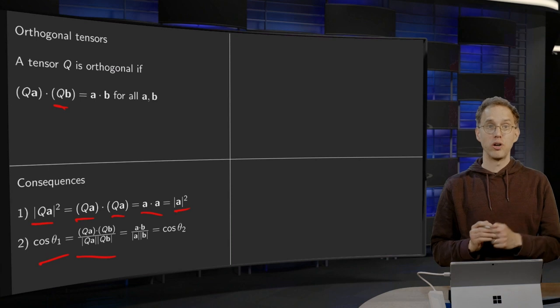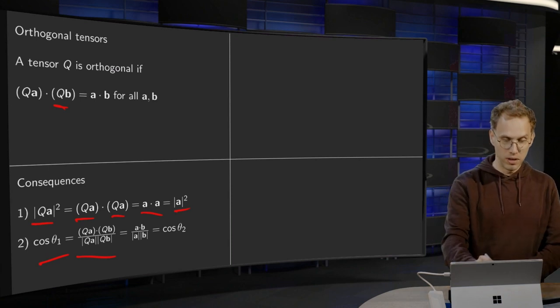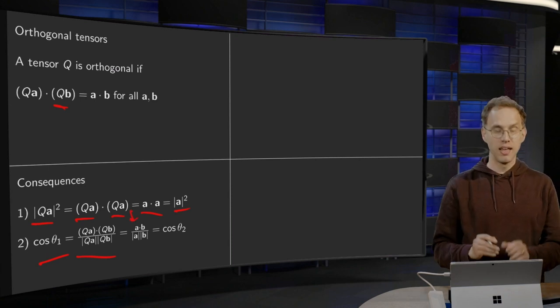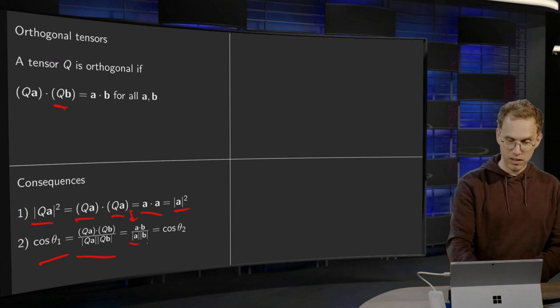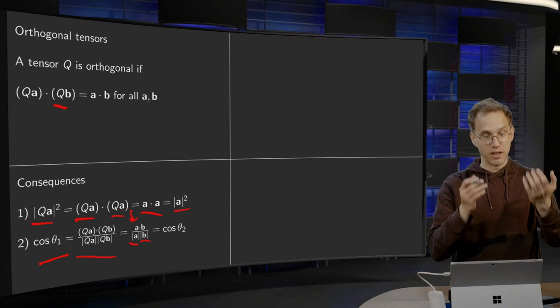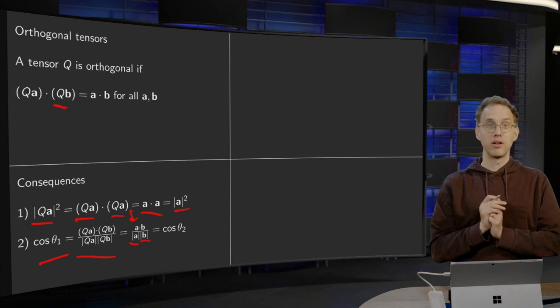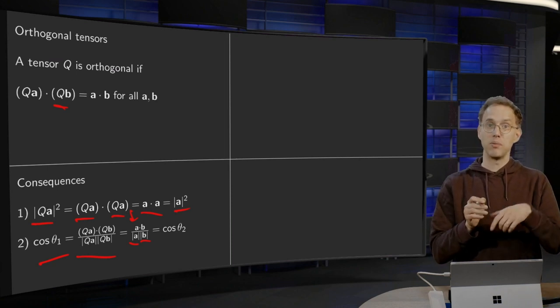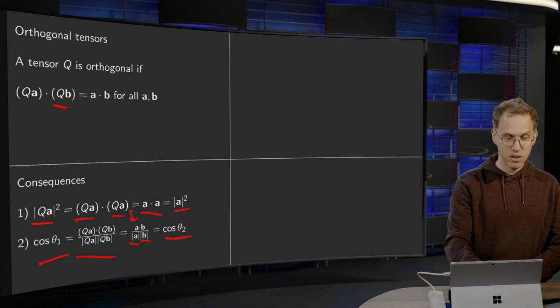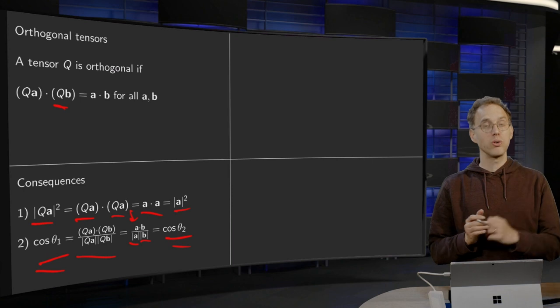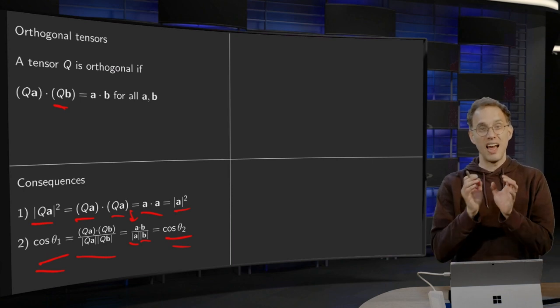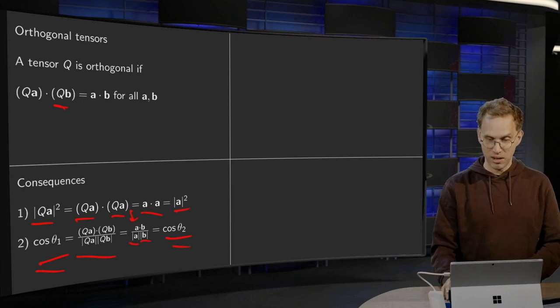Now Q is orthogonal, so (Qa)·(Qb) is just a·b, and the length of Qa equals the length of a, and the length of Qb equals the length of b. What we see is the formula for cosine of θ₂, the angle between a and b. So those angles are the same. An orthogonal transformation Q leaves angles and lengths the same.